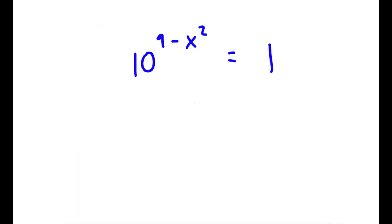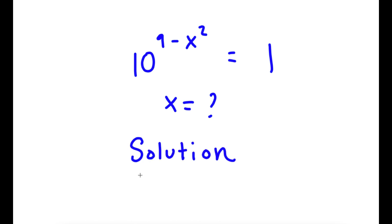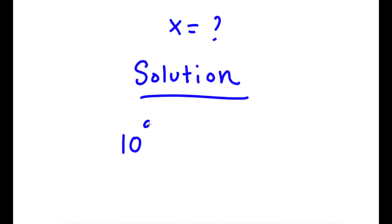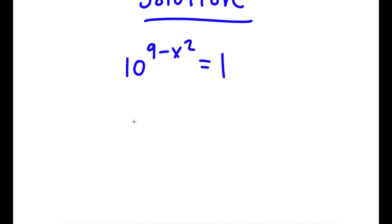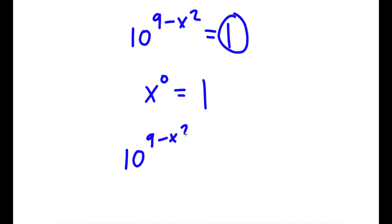In this problem, I have 10 to the power of 9 minus x squared is equal to 1. I want to find the value of x. Any number to the power of 0 is simply 1, so I'm going to rewrite 1 as 10 to the power of 0. So now I have 10 to the power of 9 minus x squared is equal to 10 to the power of 0, because the two bases are now the same — both 10.